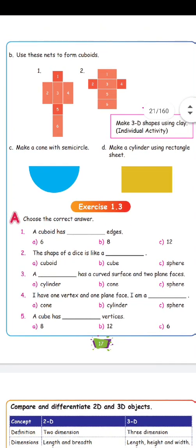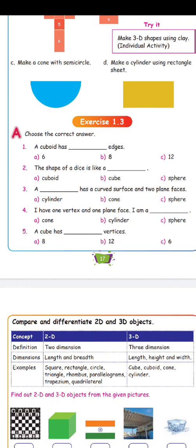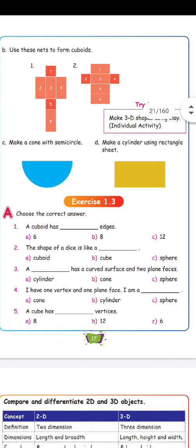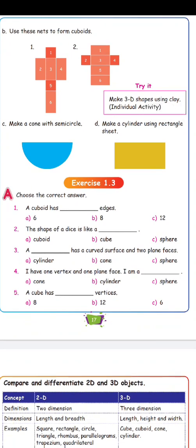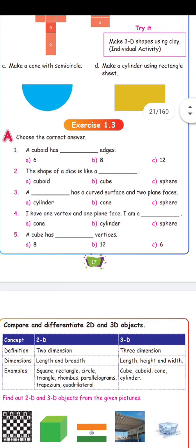Make a cone on a semicircle — form a cone from a semicircle shape. Next, choose the correct answer: a cuboid has 12 edges. The shape of a dice is like a cube. A cylinder has one curved surface and two planes. A cube has 8 vertices.